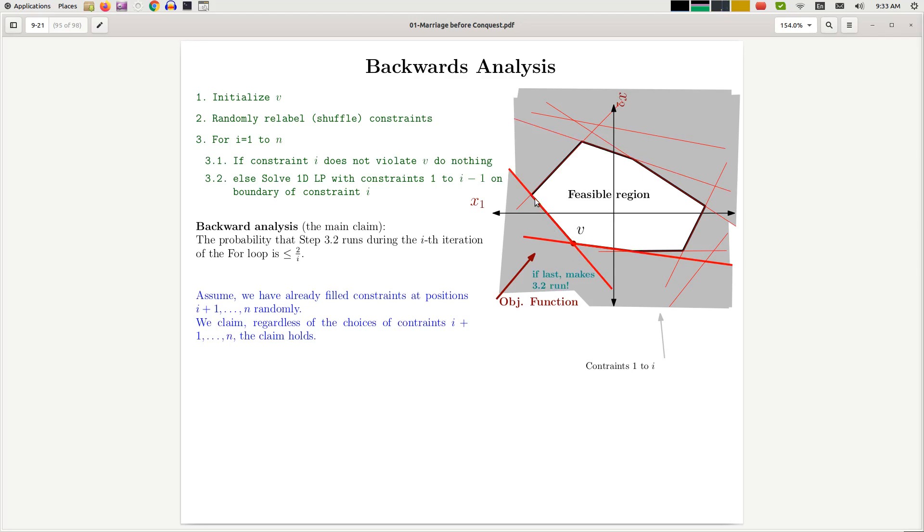The only problem is if one of these two constraints that are adjacent to v were selected as the last constraint. If one of them were constraint number i, then if I go back to constraints 1 up to i-1, then the feasible region would be different. It would not have this v at the boundary. So the answer could potentially be different. So therefore, the probability that step 3.2 runs is equivalent to the probability that one of these two constraints were chosen as the i-th constraint.